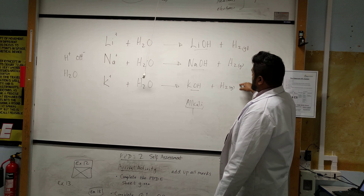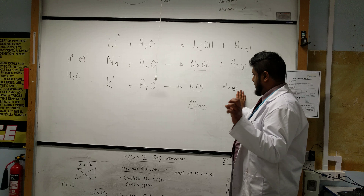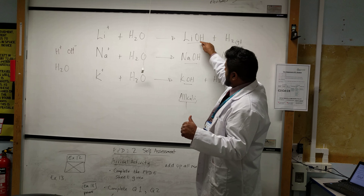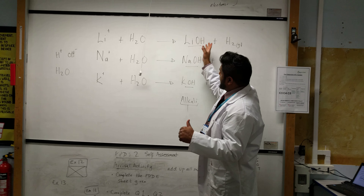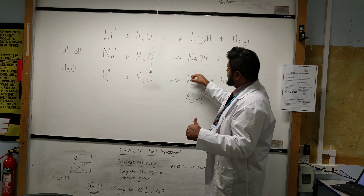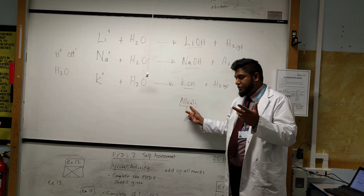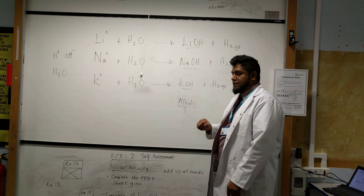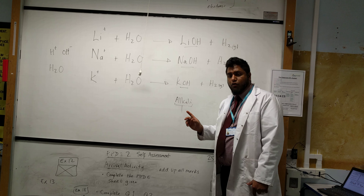Hydrogen gas will ignite if the heat is high enough within the reaction, and the metals that react with water form metal hydroxides. Metal hydroxides are alkali, so if we put in a universal indicator, it should tell us whether the alkali was actually formed.